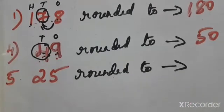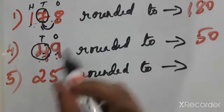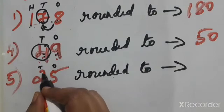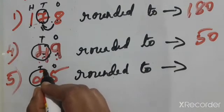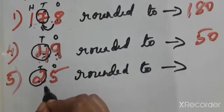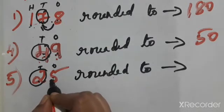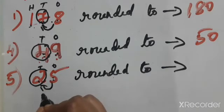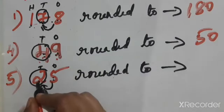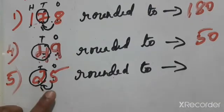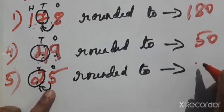Next question, the fifth: 25 rounded to the nearest tens. Which place do we round? The tens place. Two is in the tens place, five is in the ones place. We have to round off two. Knock the door and ask: do you have five rupees or more? We have five. Five means we can help two. So two will become three — one is added. And once the door is knocked, five will become zero.